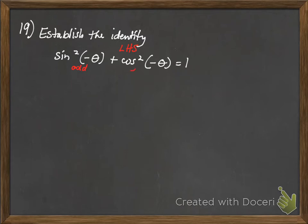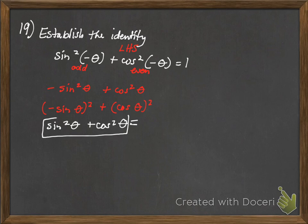Sine is odd. Cosine is even. I'm going to go ahead and bring that negative out, so I get negative sine squared theta plus cosine squared theta equals 1. Now, I can rewrite this as negative sine theta squared plus cosine theta squared, and I'm trying to make that equal 1. So if I square a negative, I get a positive. So now I have sine squared theta plus cosine squared theta, and by use of the Pythagorean theorem, I know that this equals 1. So there's the identity. I made the left-hand side look like the right-hand side.